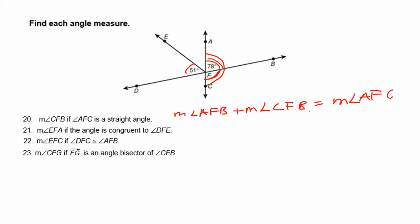Now we're going to plug in what we know. We know that measure of angle AFB is 78, so I'm going to replace this with 78 degrees. I don't know the measure of angle CFB, but I do know the measure of angle AFC is 180 degrees, because it's a straight line.